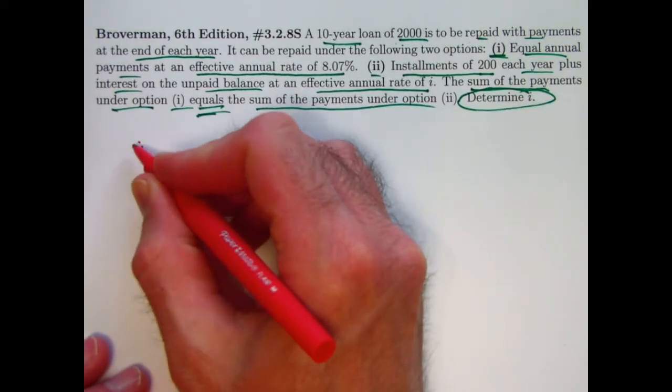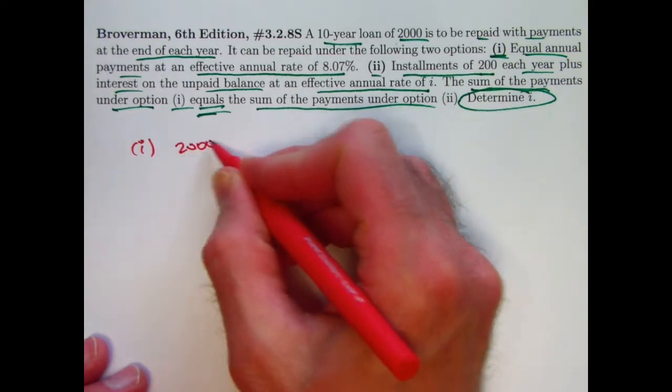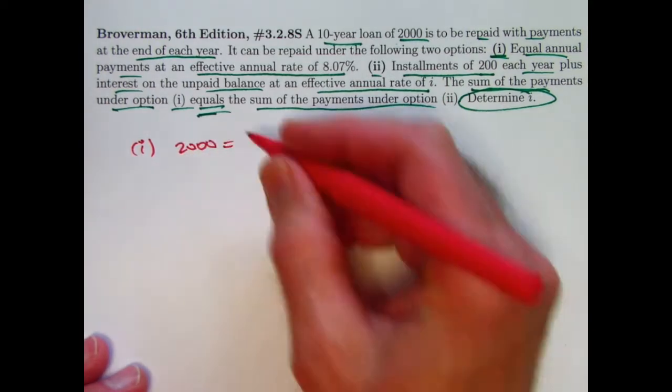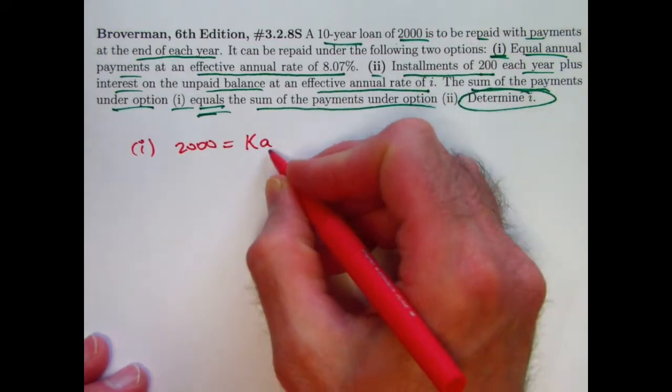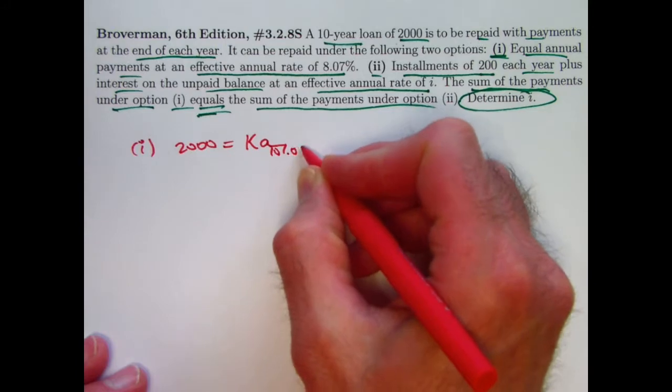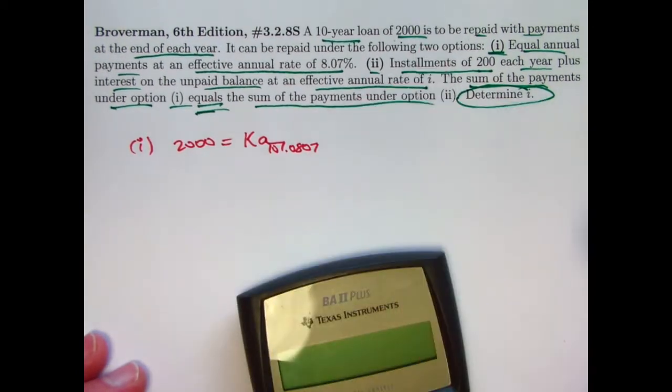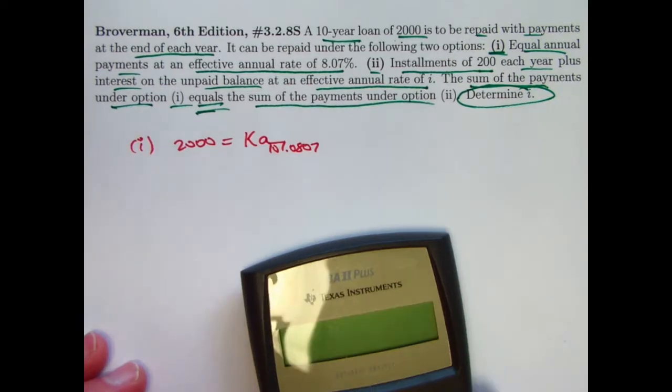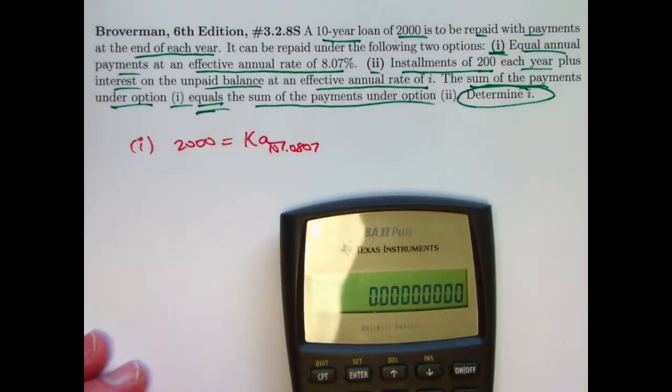Alright, thinking about option one, we can write down our usual equation. The loan amount, $2,000, equals the present value of all the payments and they are constant payments, K, as an annuity immediate. So I can write it this way. I can go ahead and solve for A and then solve for K. I'm going to need the value of K because I want to add up the values of K. I want to find 10K.